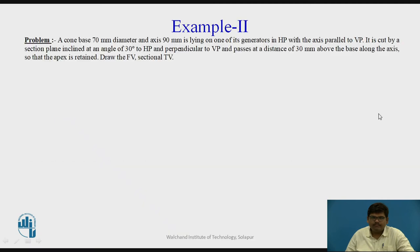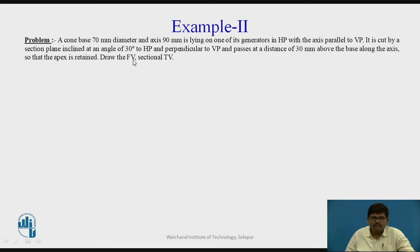Now, moving further, in the previous video we have seen an example on cone. A cone of base 70 mm diameter and axis 90 mm is lying on one of its generators in HP, with the axis parallel to VP. It is cut by a sectional plane inclined at an angle of 30 degrees to HP and perpendicular to VP, and the same plane passes at a distance of 30 mm above the base along the axis, so that the apex is retained. Draw the front view and sectional top view.